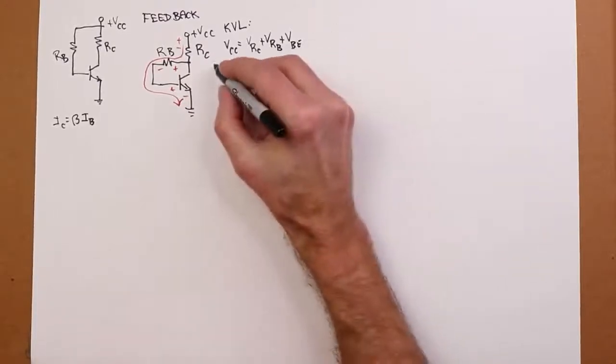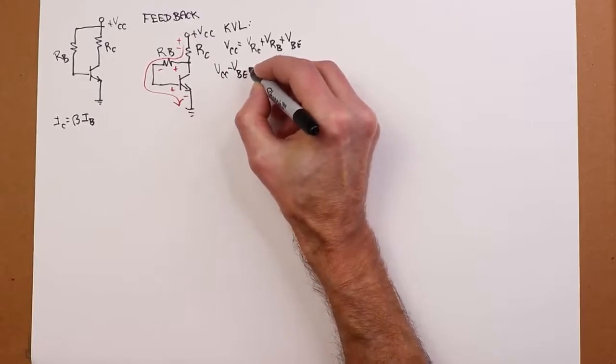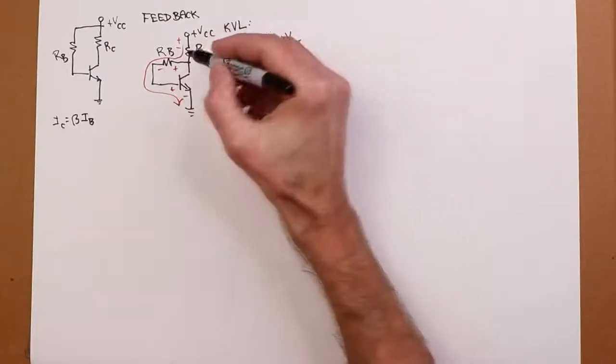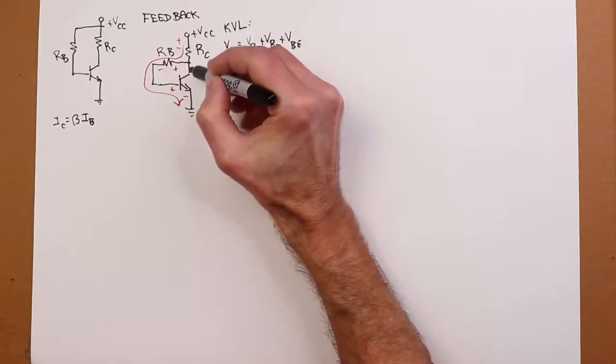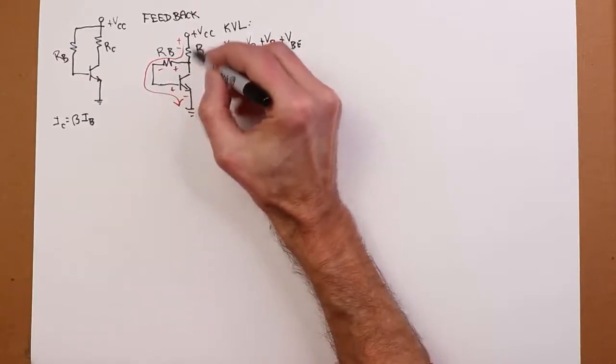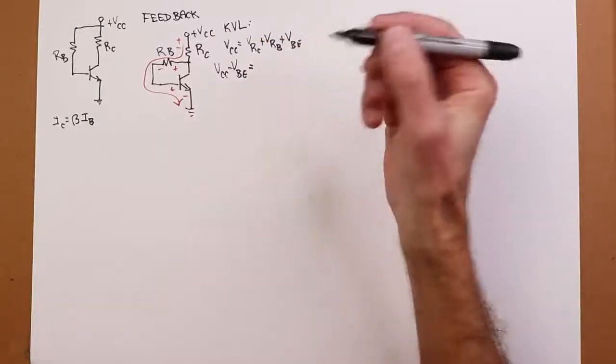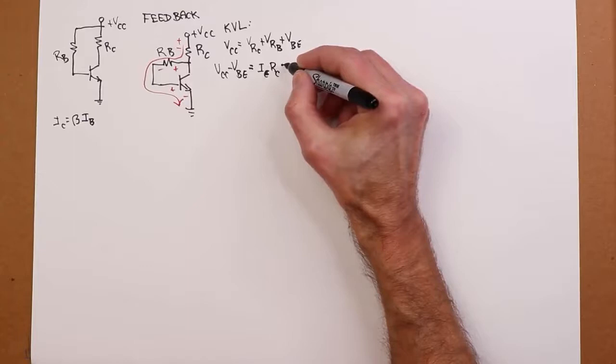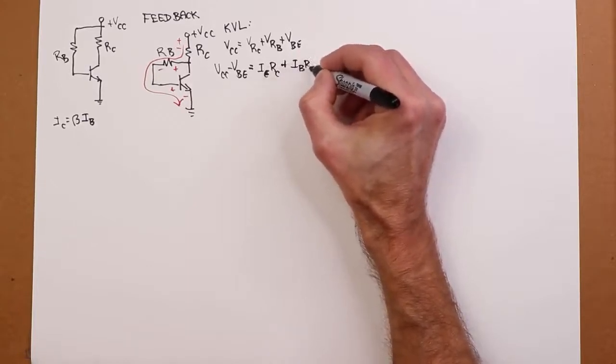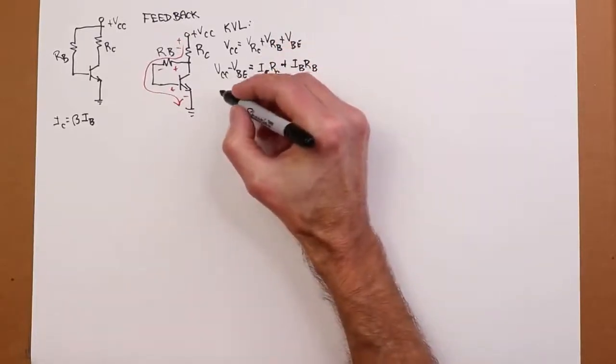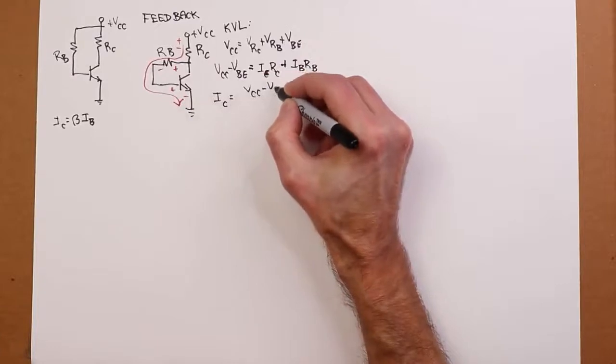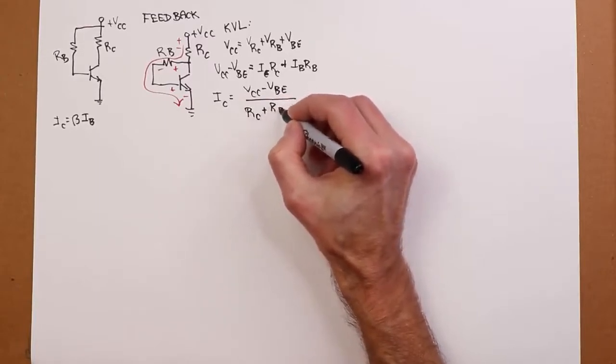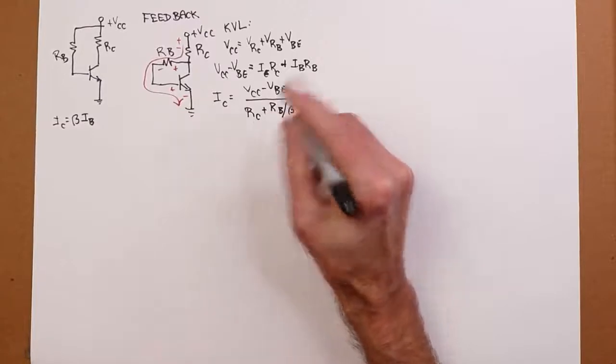And when we do that, if you look at this closely, you realize that the current through the collector resistor is actually the emitter current because you've got base current this way and the collector current goes there. So it's IB plus IC that are actually flowing through RC. Small variation for typical betas, but nonetheless, so you end up with this. That's IE right there. And then, like I said, you do the substitutions and then solve for IC. And you get Vcc minus VBE divided by your RC plus RB over beta. And as usual, if you can make RB over beta a lot smaller than RC, you get high stability.